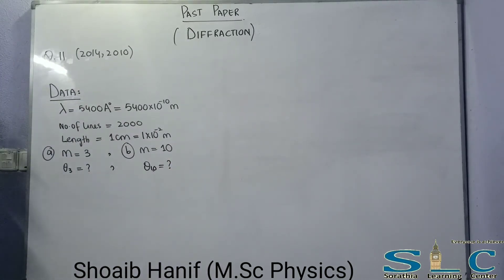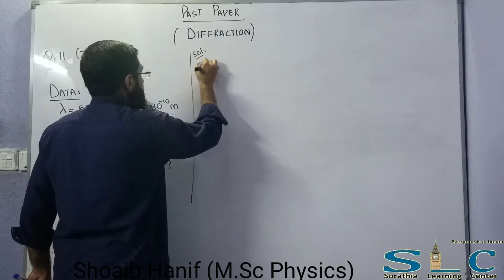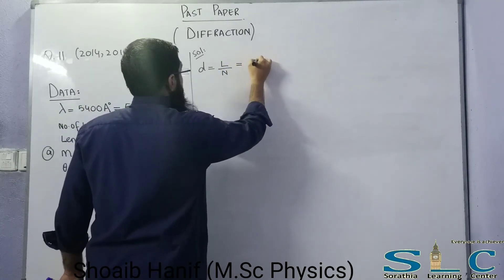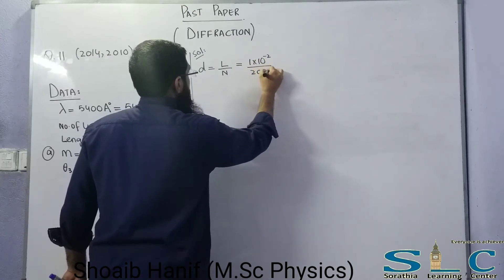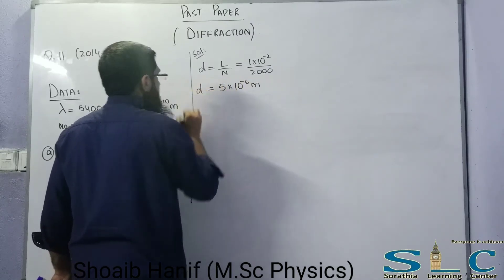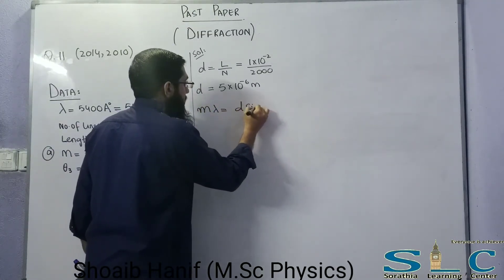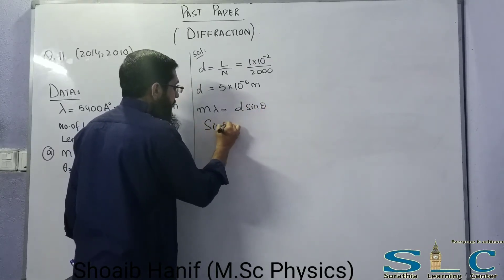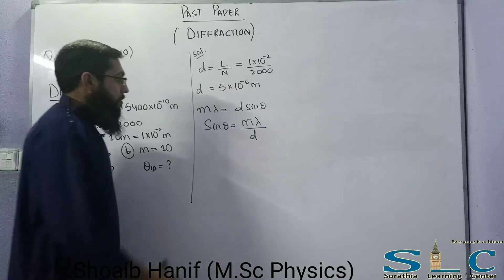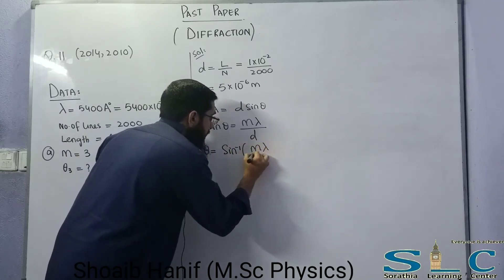First find D: D = L / N = 10⁻² / 2000 = 5×10⁻⁶ meter. Using m·λ = D·sinθ, rearranging: θ = sin⁻¹(m·λ / D). For part A with m = 3: θ₃ = sin⁻¹(3 × 5400×10⁻¹⁰ / 5×10⁻⁶).